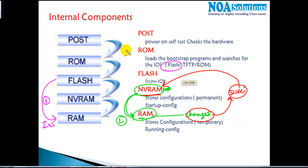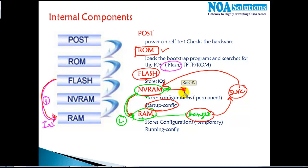So these are the four main components: ROM is a chip on the motherboard containing the bootstrap program that tells how to load the operating system — by default, IOS is always loaded from Flash. Flash is the component that stores the IOS. Both NVRAM and RAM store configurations, but NVRAM is like a hard disk — secondary memory that stores configurations permanently — while RAM is primary memory that stores configurations only temporarily.